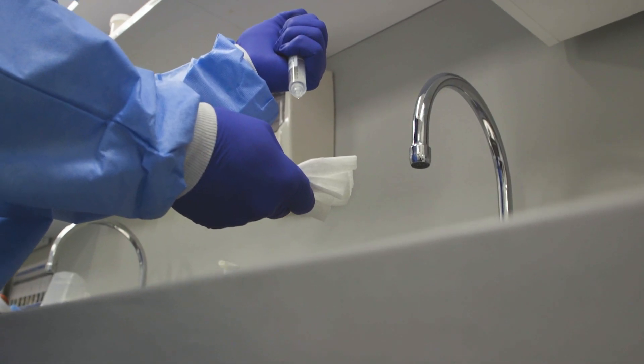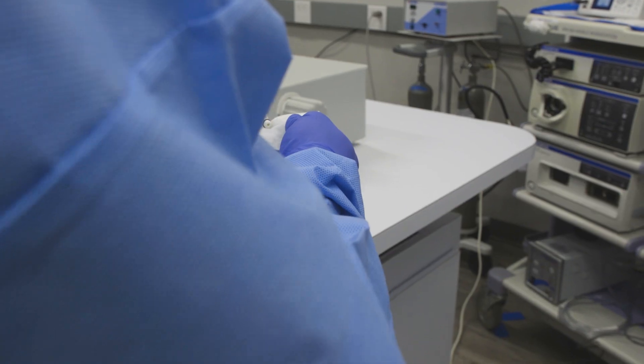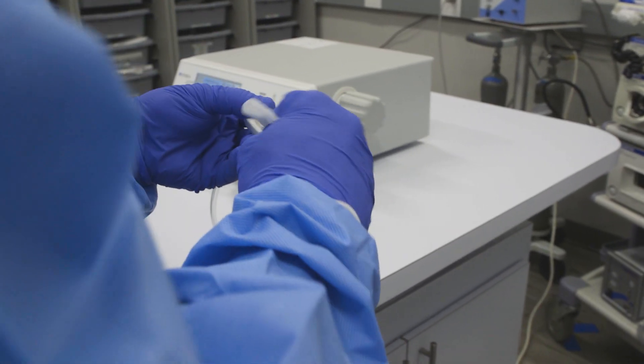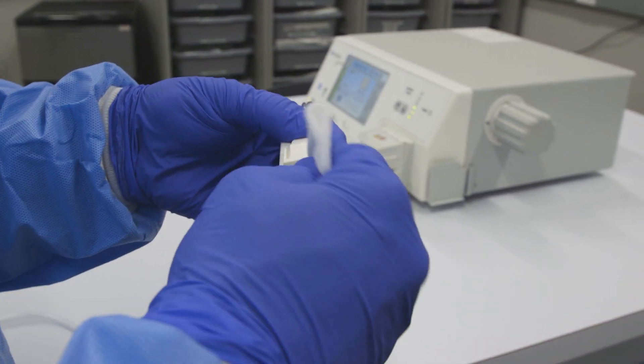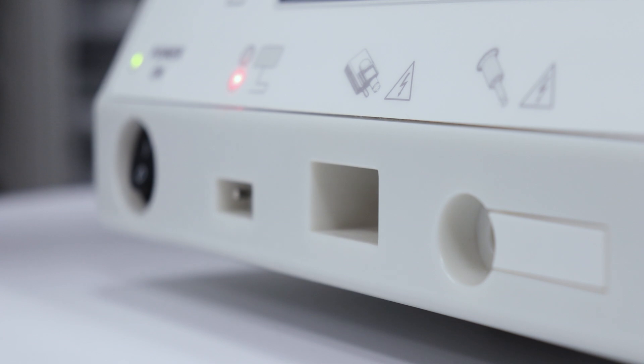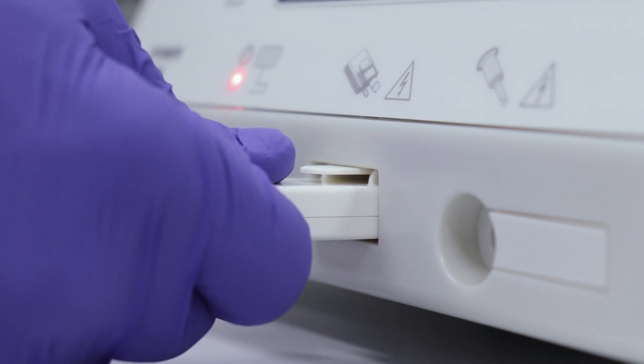For easier insertion of the ArcConnect into the GI-4000, while using gloved hands, pour a few drops of sterile water onto clean, lint-free gauze and lightly wipe around the perimeter of the black o-ring. Insert the ArcConnect into the GI-4000 by pushing in and lifting up until an audible click is heard.